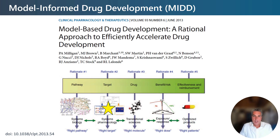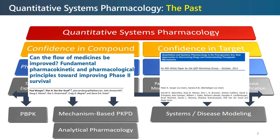Quantitative systems pharmacology, or QSP, started to emerge as a new discipline within the broader model-informed drug development (MIDD) approach just over 10 years ago, as illustrated by a paper from Pfizer from that time. The initial focus of QSP was on target selection in early research, in an attempt to tackle phase 2 attrition due to lack of efficacy, which at the time was running below 20 percent.